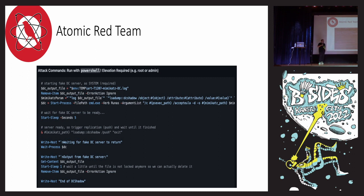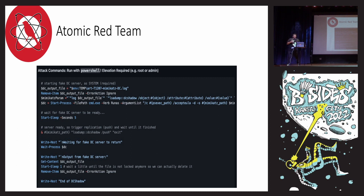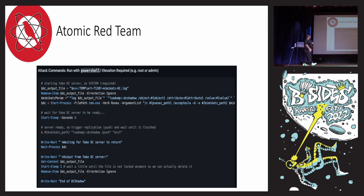Atomic Red Team tests are all in YAML and they also have them in Markdown on the GitHub repo. This is the code or script that you would run to actually create a rogue domain controller in an Active Directory environment. The reason you do that is you can convince other machines connecting to your domain controller — this fake domain controller — that you're a domain admin. Then you can do a lot of dangerous stuff. This is a pretty easy attack to detect, and I'll use this as an example as we go through.